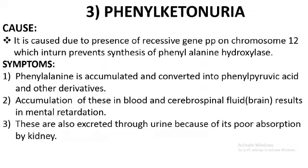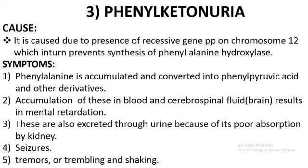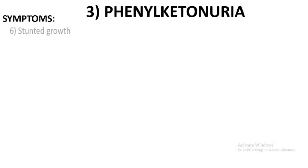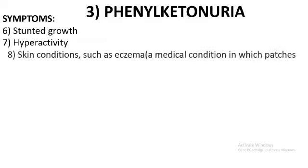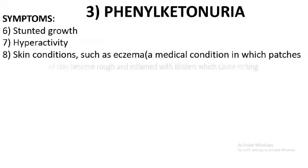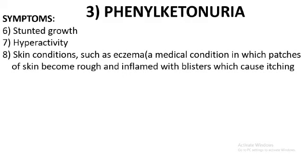The third symptom is that since phenylalanine accumulates in the blood, it is excreted through urine because the kidneys cannot absorb it. The fourth symptom is seizures — partial seizures or tremors involving trembling and shaking. Other important symptoms include stunted growth, hyperactivity where the child is more active, and a skin condition called eczema, where patches of skin become rough with inflammation, blisters, itching, and bleeding.